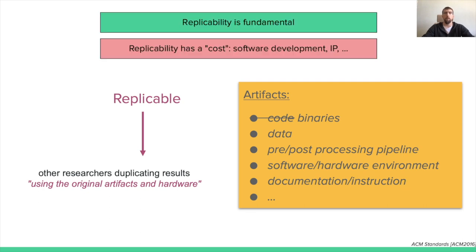I hope that I convinced you that replicability is something important. You might also be aware that replicability may have a cost. It takes time to produce all these artifacts, and in some situations — let's say I'm staying only one year for a postdoc — it might be tempting to skip this and just move on to the next project. In the second part of this talk, we'll focus on the tools and guidelines that will make this process easier, both at the individual and community scale.